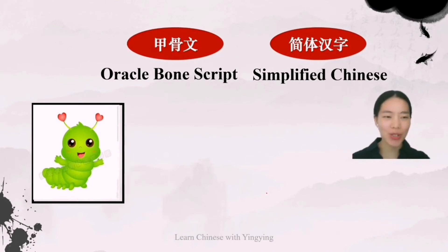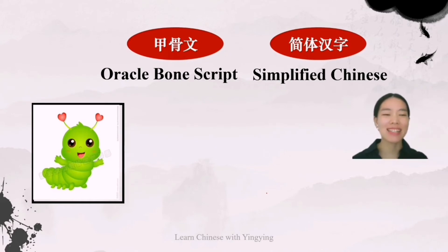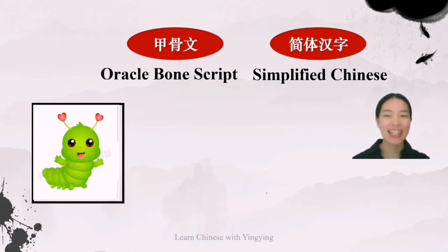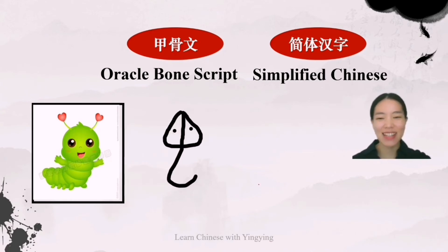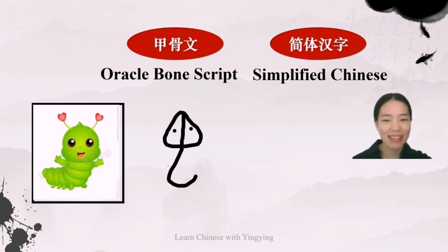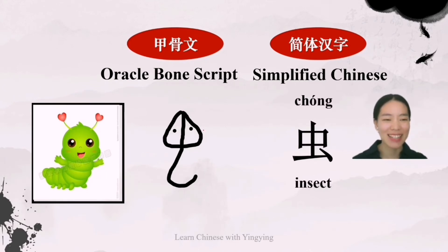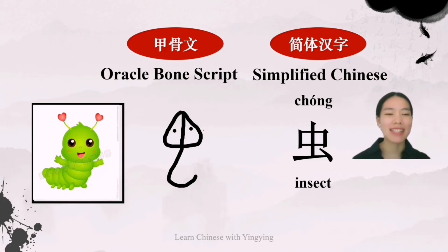The fourth word we are going to learn is 虫 (chóng). It means insect. Look at this cute picture — how would you sketch it? Now let's look at the oracle bone script. I feel it's quite a truthful sketch of it — the head, the body, the eyes. And here is our simplified Chinese, pronounced as 虫 (chóng), it means insect.